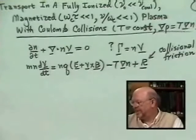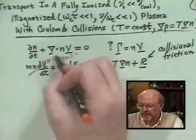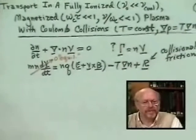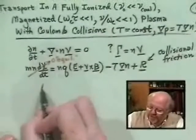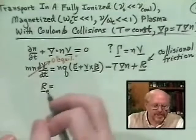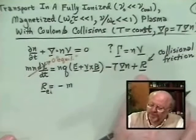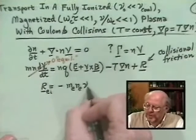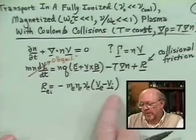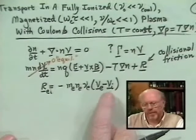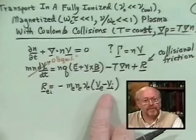We want transport equilibrium, meaning the flows aren't changing rapidly — more or less steady flows. The collisional friction force, for electrons colliding on ions, is just a relaxation of the flow due to collisions: R = m_e · n_e · ν_e · (v_e − v_i). I need v_e − v_i to make the equation Galilean invariant, and also because friction arises from the difference between electron and ion flow velocities.